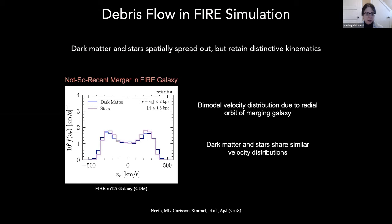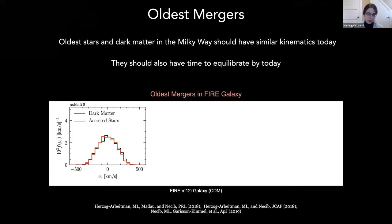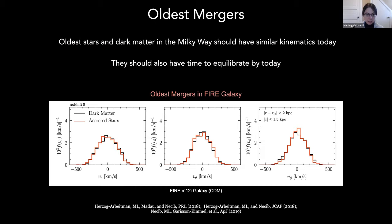The last case to consider is the oldest mergers. In these cases, the material came in very early and has had time to equilibrate. Looking at material dumped into a Milky Way-like galaxy by some of the oldest mergers in FIRE, we find that the radial velocity distribution of dark matter and stars track each other almost exactly, and both follow a simple Gaussian distribution. This applies to all velocity components — in each direction we get the expected Gaussian behavior, essentially the Maxwell-Boltzmann distribution. What's really interesting is that in each case the dark matter and stellar distributions line up quite precisely.